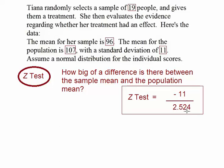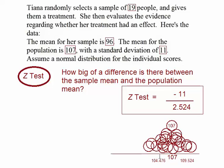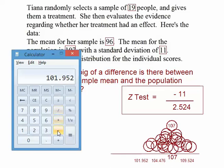That standard error, for example, tells us that approximately 68 percent of our sample means will, because of sampling error, occur between 104.476 and 109.524, just due to sampling error and no other reason than that. Two standard errors below the mean gets us down to 101.952.